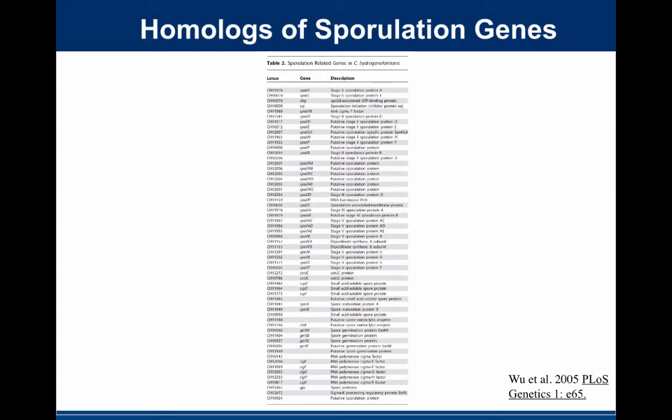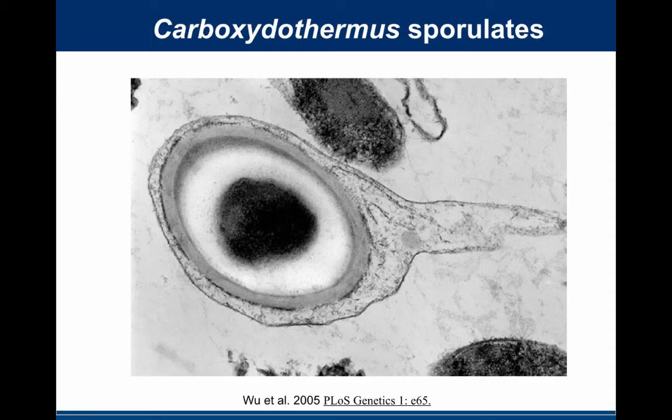When we annotated the genome of this organism, we discovered something surprising. Our collaborator had been spending years trying to get it to form endospores like Clostridia and Bacillus anthracis do, and was unable to do it. And yet throughout the genome we found lots of homologues of spore-forming genes. So we went back to our collaborator, Frank Robb, and said: can you try again? He tried a bunch of new methods, and he actually got it to form endospores, just like in Bacillus anthracis.